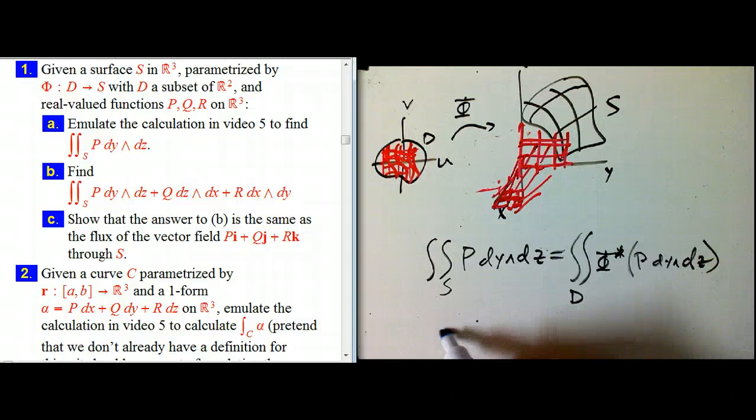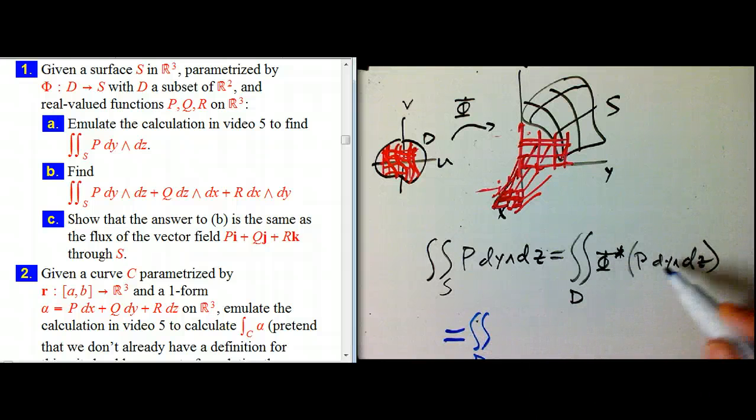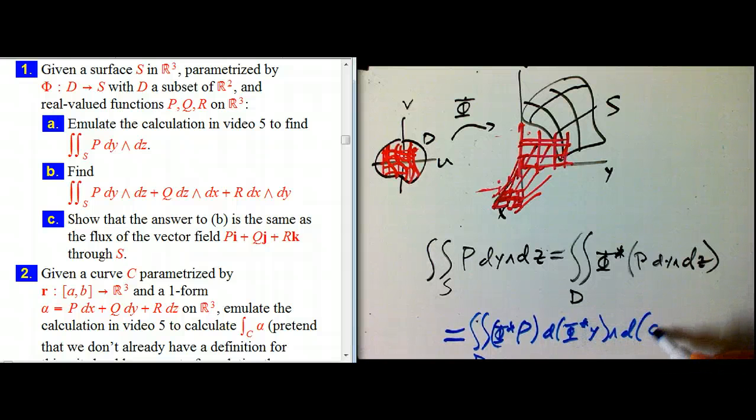So let's see, I can fit one more line in here. So that's going to be, now this is the part where it's really great, phi star, my assertion is that that goes inside the product, the phi star of a product, ordinary scalar product and wedge product is the product of the phi stars, and it goes inside the d, and so phi star P times d of phi star y wedge d of phi star z.